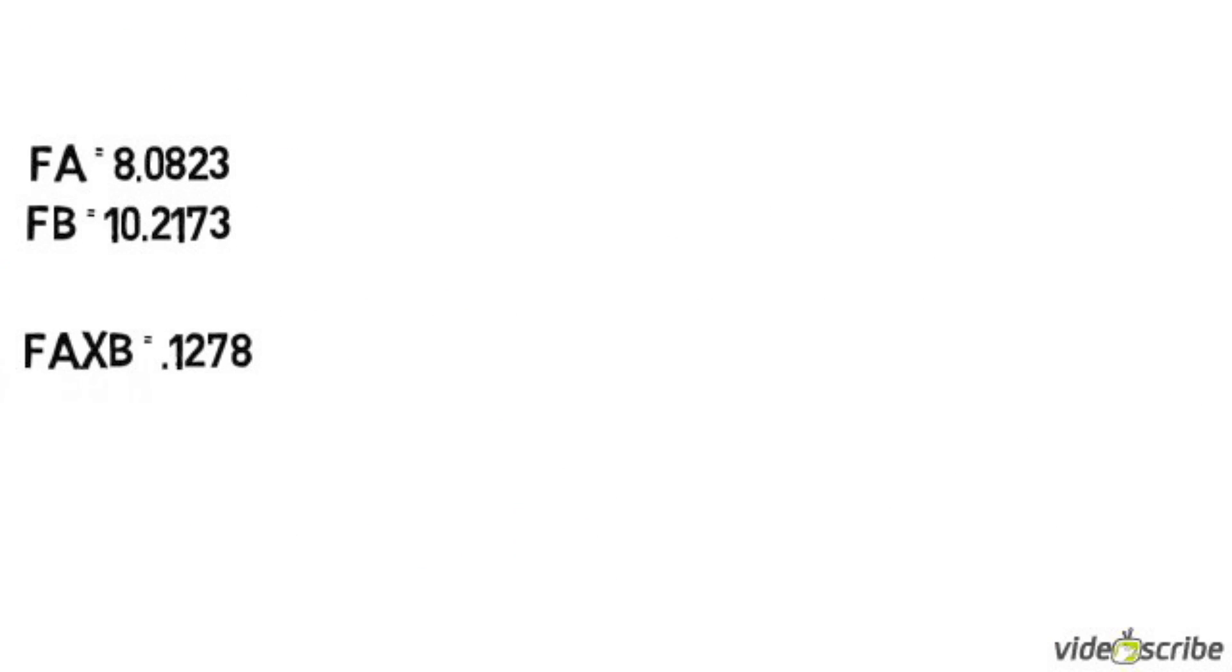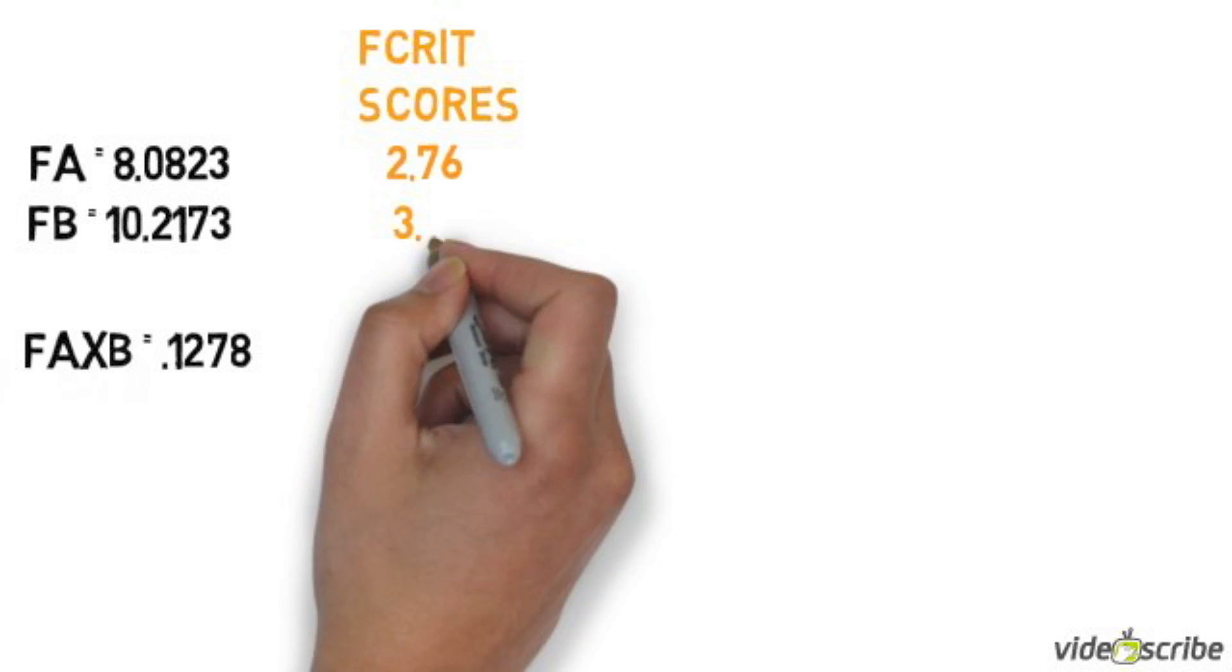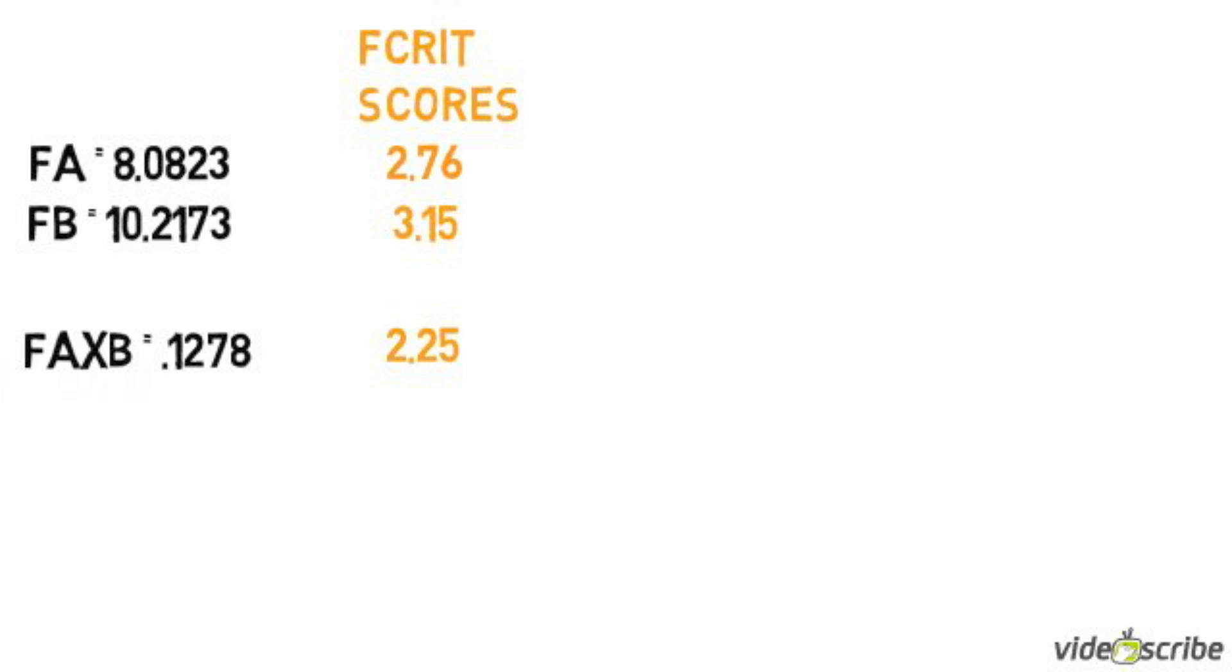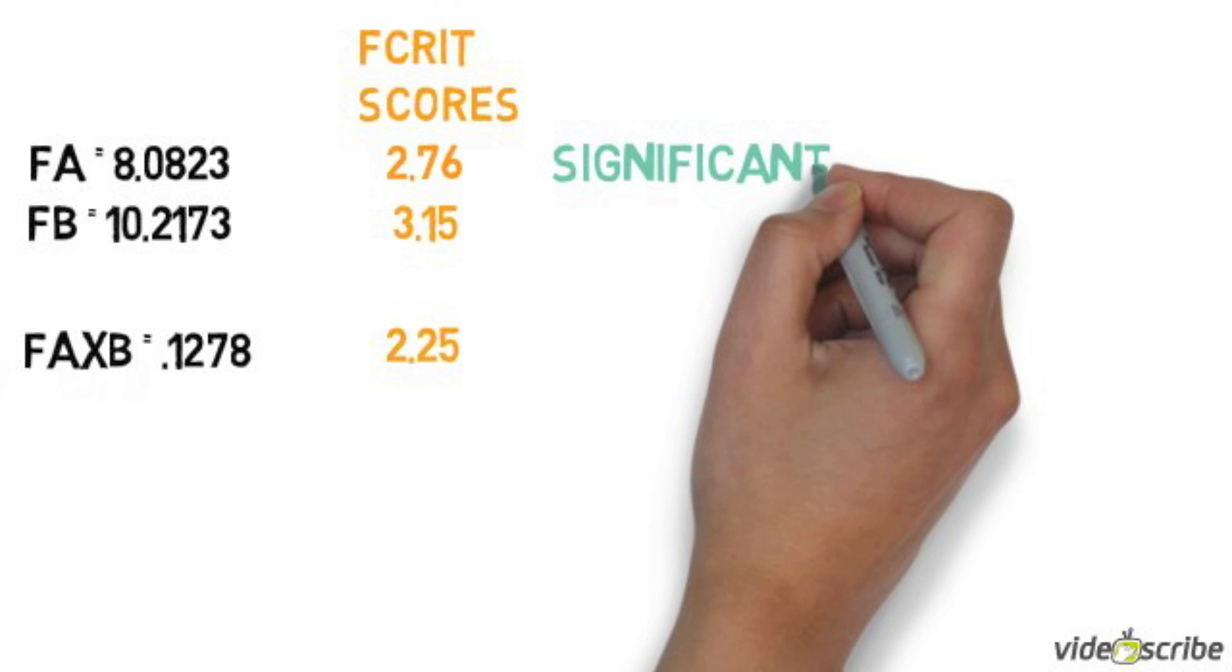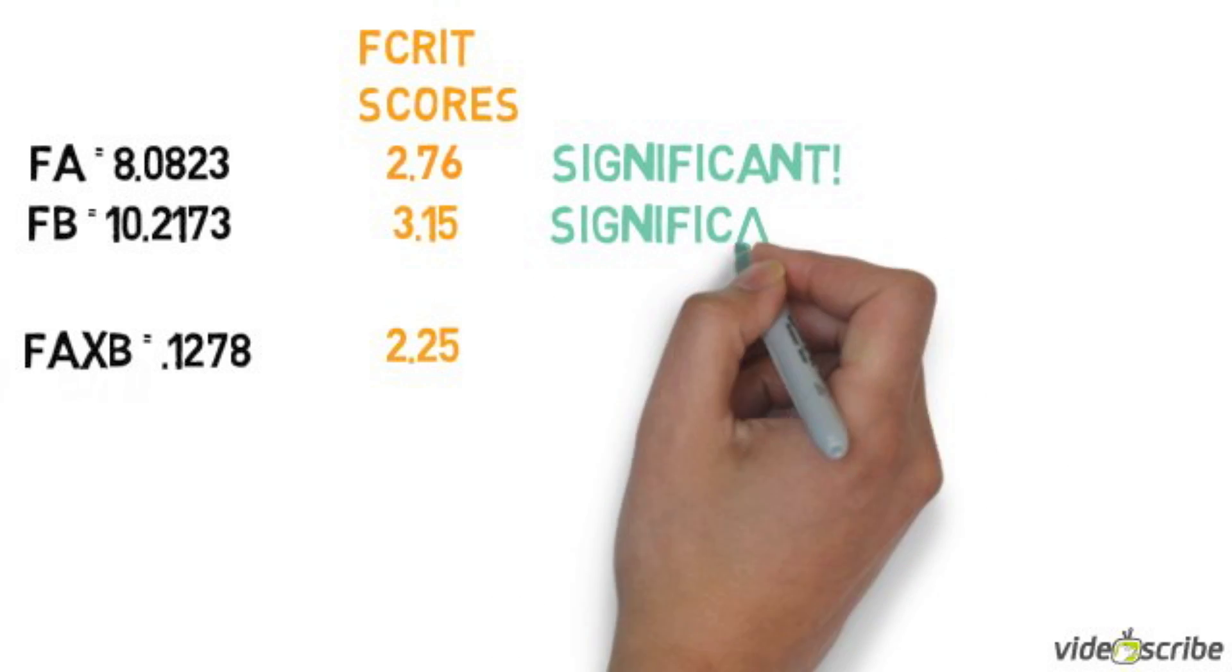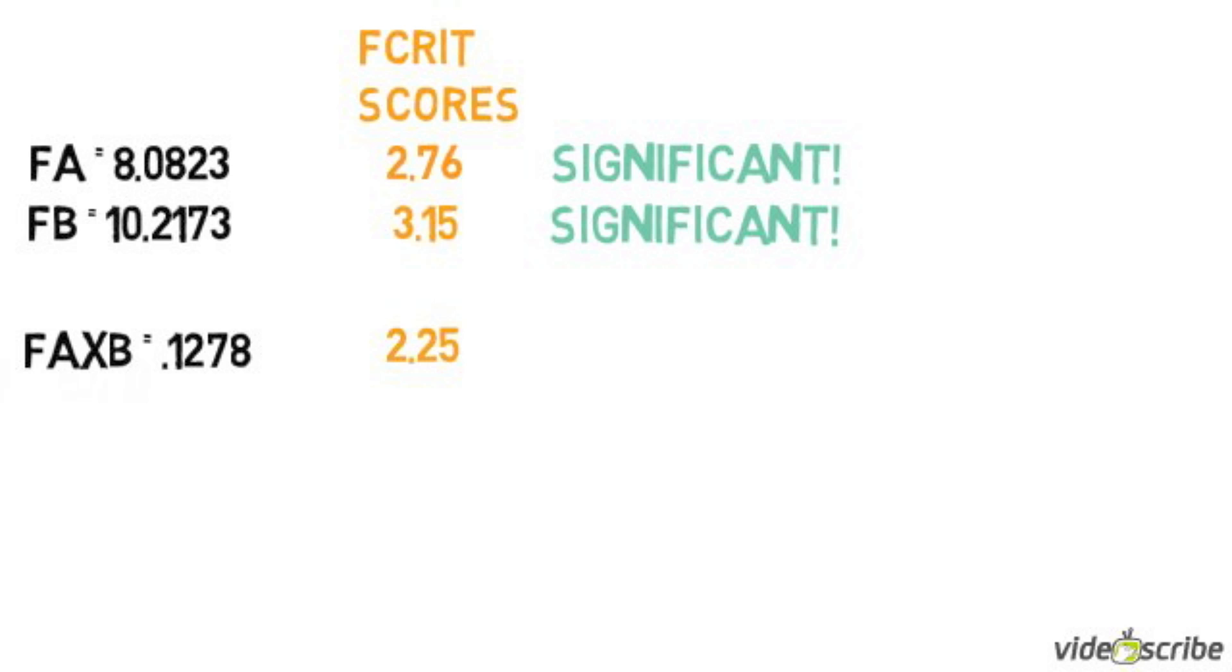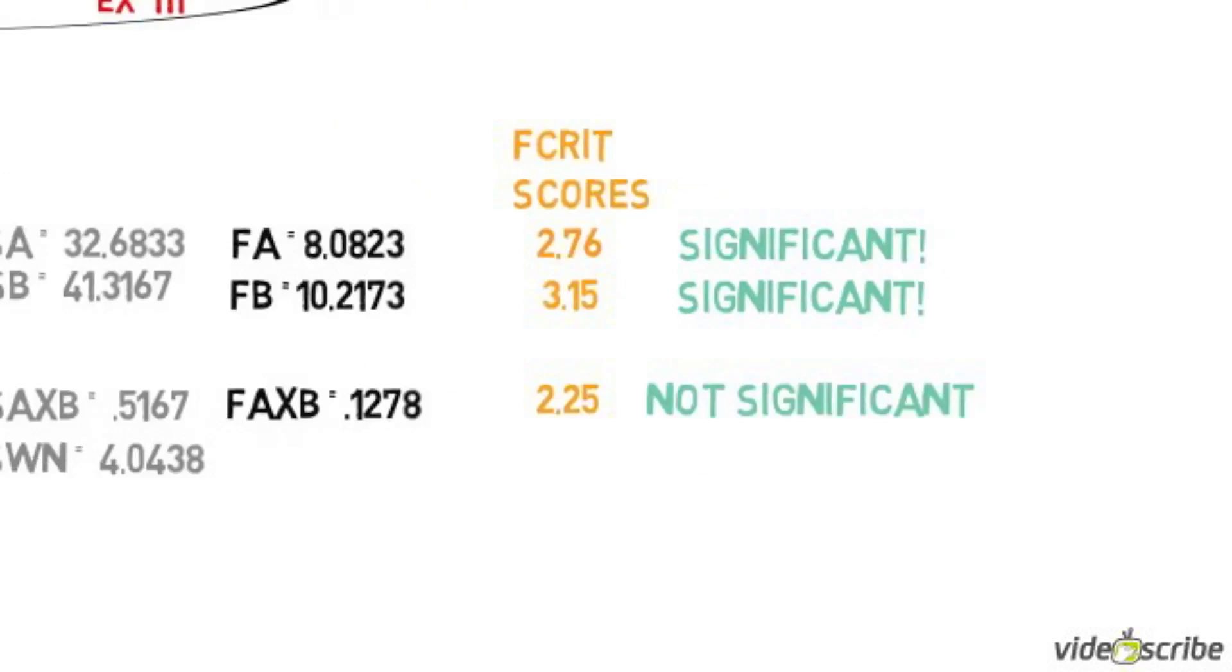Now that we have the F obtained, we need to find the F crit scores on the back of your book. You can find this by looking at the degrees of freedom within and then the degrees of freedom for each interaction you're looking at. Now you can see that F obtained for A and F obtained for B are both larger than the F crit scores. That means they're significant. F obtained for the interaction is not larger, so it is not significant.